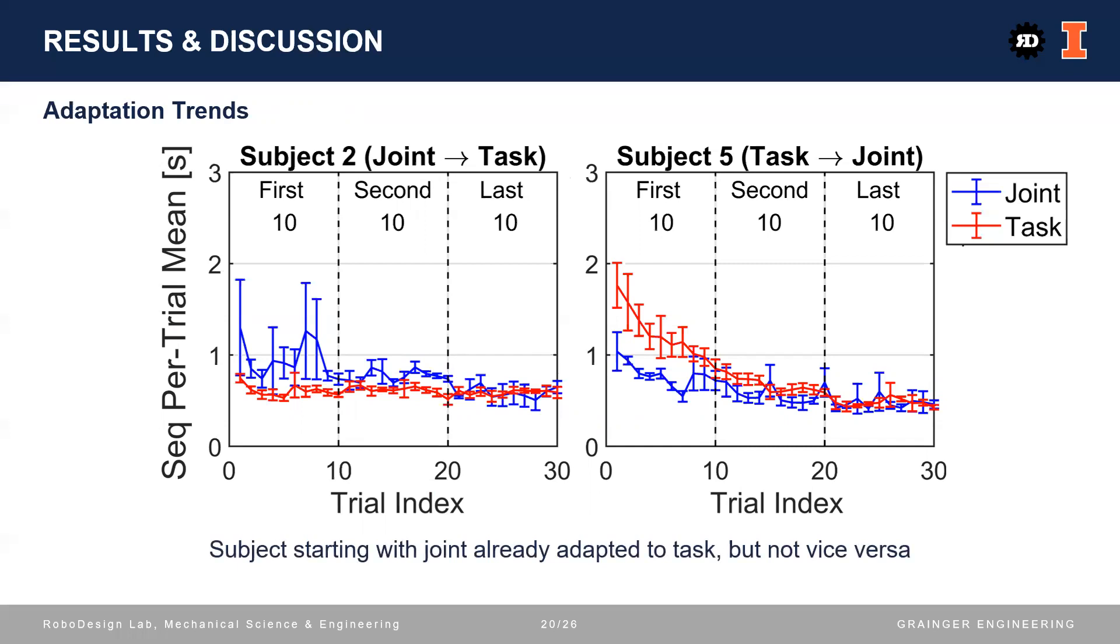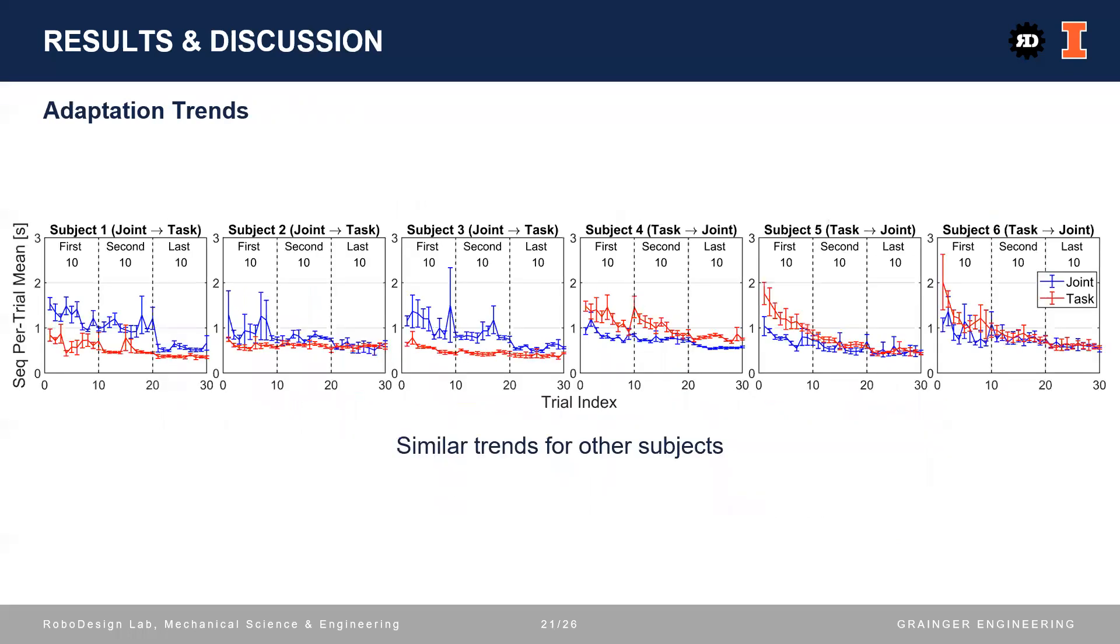As we see, subject two gradually adapted to the mapping the subject started with, and upon transition to task-based mapping, subject two appeared to be already adapted, but this phenomenon did not occur to subject five. Similar trends can also be observed on other subjects. Hence, we can deduce that, in terms of the ease of adaptation, task-based mapping is better.